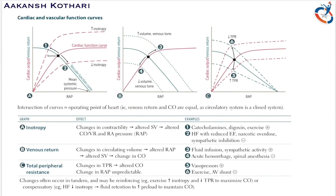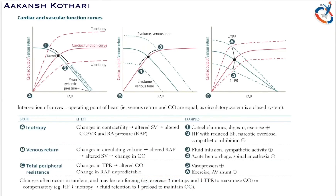Changes often occur in tandem and may be reinforcing. In exercise, there is an increase in inotropy as well as a decrease in total peripheral resistance to maximize cardiac output. In heart failure, there is a decrease in inotropy, and since there is fluid retention to increase preload, it acts as a compensatory mechanism to try to maintain cardiac output. These are the three basic graphs of cardiac and vascular function curves.